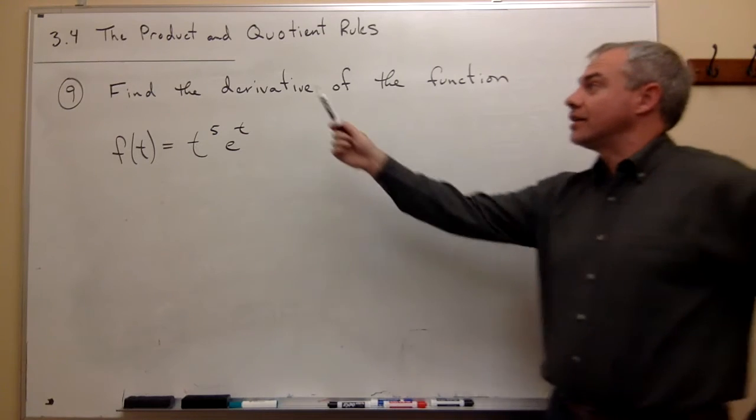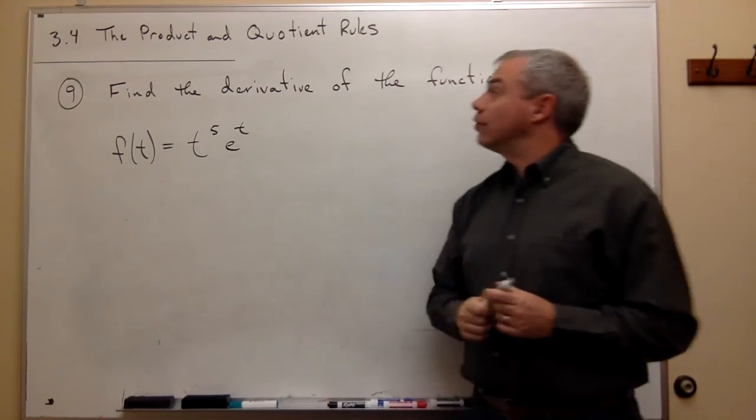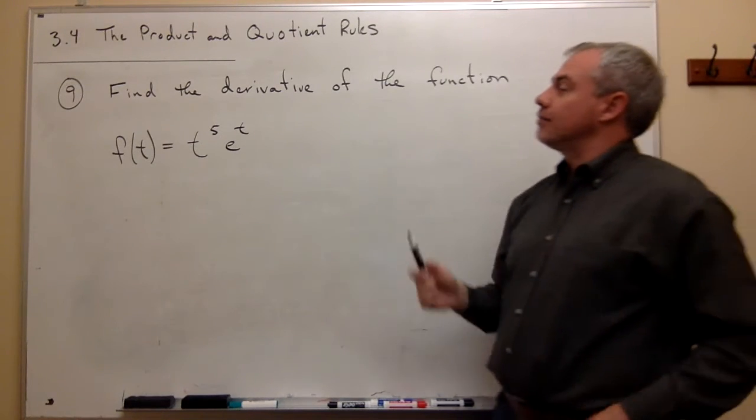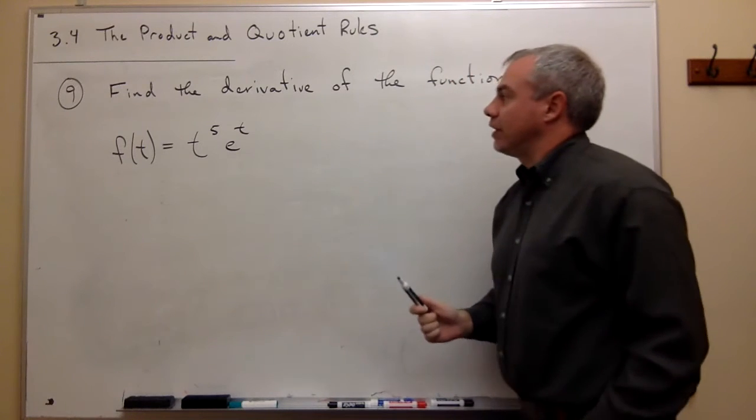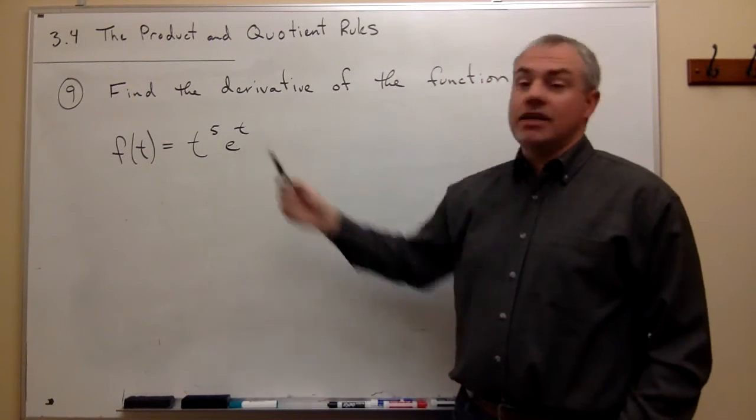Welcome back. Today I'd like to look at section 3.4, the product and quotient rules, and we want to start with number nine. We want to find the derivative of the function f of t equals t to the fifth e to the t.